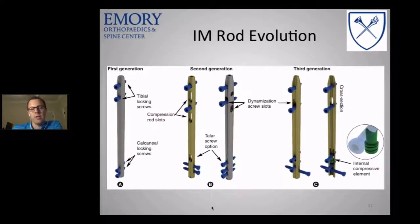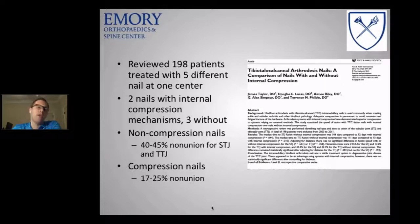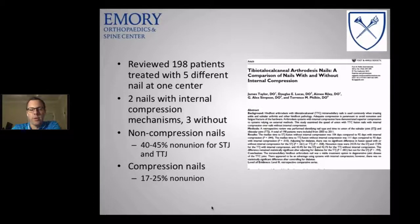The last evolution is what the Dynanail provides: continuous compression. First-generation nails had a static locking mechanism on each side. Second-generation allowed compression through a compression rod slot. Third generation added an internal compressive element. Fourth generation provides continuous compression with the Dynanail. A study by Philbin's group looked at 198 patients over eight years. Non-compressive nails had 40–45% non-union rates at both subtalar and tibiotalar joints. Compression nails did better but still had around 20% non-union rates.